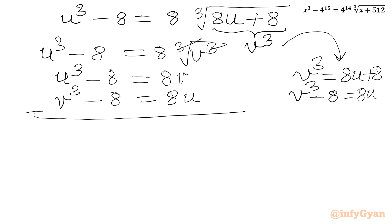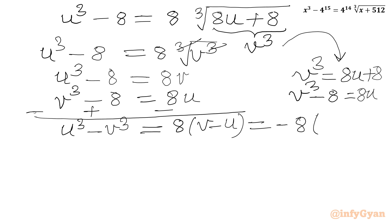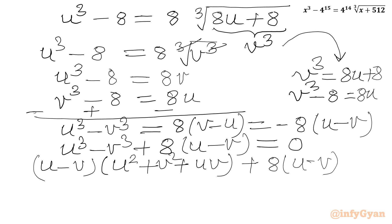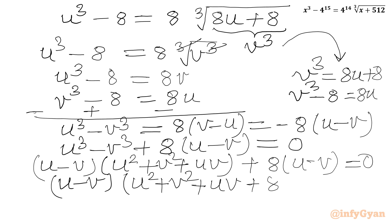Now subtract the second equation from the first. So sign change will be there. I will write u cube minus V cube, minus 8 plus 8 will cancel, equal to 8 times V minus U, or taking minus 1 common, minus 8 times u minus V. Now let's write all terms to one side: u cube minus V cube plus 8 times u minus V equal to 0. Applying the a cube minus b cube formula, we write u minus V in one bracket, and in the other bracket u square plus V square plus uV, plus 8 times u minus V, equal to 0. So u minus V is common, giving u minus V times the quantity u square plus V square plus uV plus 8, equal to 0.